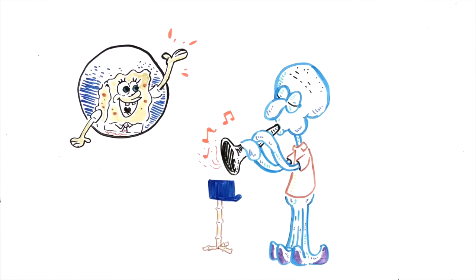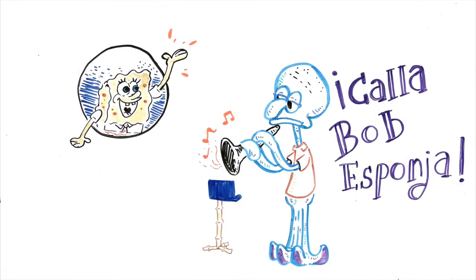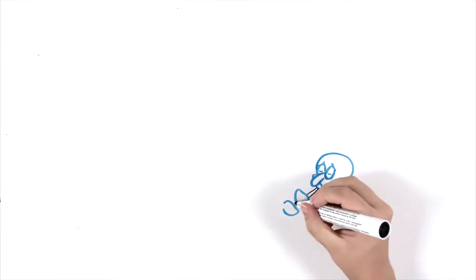This video begins in a very normal way. Squidward is practicing his clarinet at home. We hear SpongeBob laughing outside, so Squidward yells at him to keep it down, as he has a concert that night and needs to practice. It looks pretty normal for now.